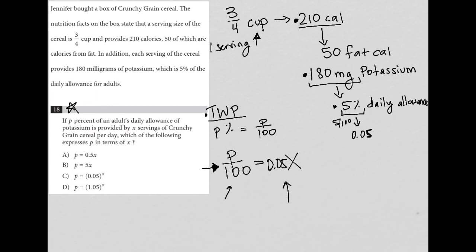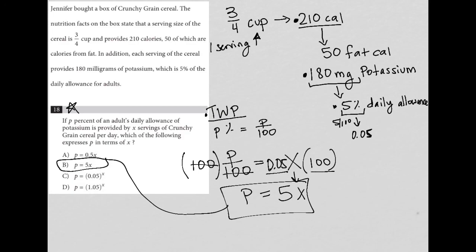which of the following expresses P in terms of X. So if I want P in terms of X, that just means I want to isolate my P variable in this equation. So I can do that by getting rid of the 100 in the denominator under the P by multiplying both sides by 100. So I'm left with P equals now 0.05 times 100 is just 5. I still have the X there. So P is equal to 5X. And therefore, my answer is choice B.